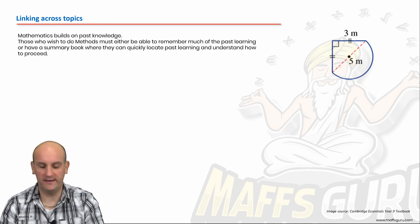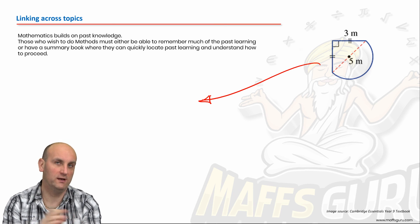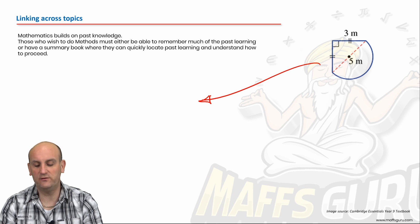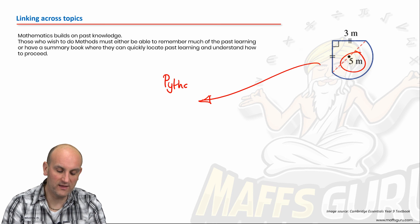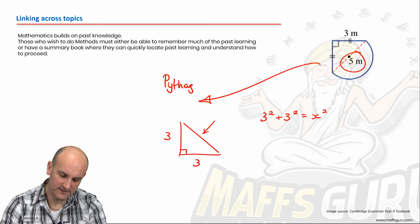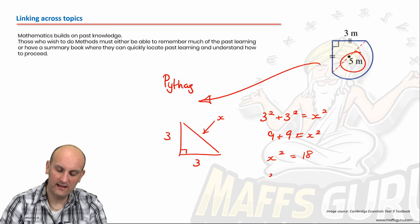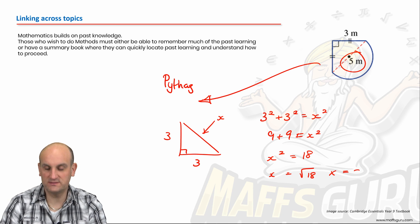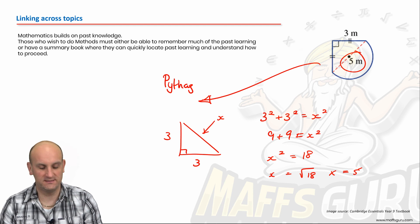Linking across topics: this question asks you to explain why that length can't be 5. It's asking you to return to Pythagoras. If I have a right-angle triangle where both legs are 3 and 3, then 3² + 3² = x², which gives 9 + 9 = 18, so x² = 18 and √18 does not equal 5. That's what it's asking — can we link bits and pieces of theory? This wasn't even a question about finding areas or perimeters.